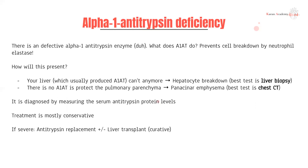Next, alpha-1 antitrypsin deficiency — you just don't produce the enzyme alpha-1 antitrypsin. What it does is prevent cells from breaking down via neutrophil elastase. Alpha-1 antitrypsin deficiency is one of those conditions that presents with multi-system involvement, predominantly affecting your liver and your lungs.